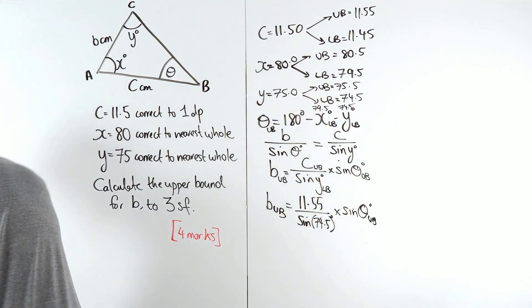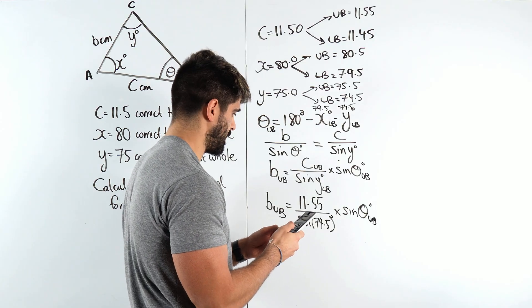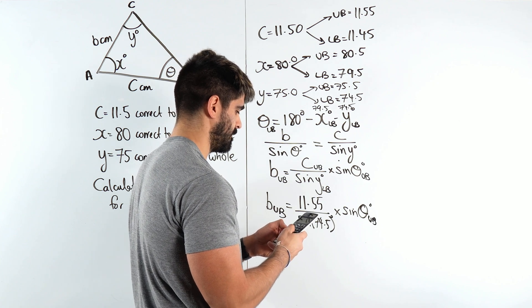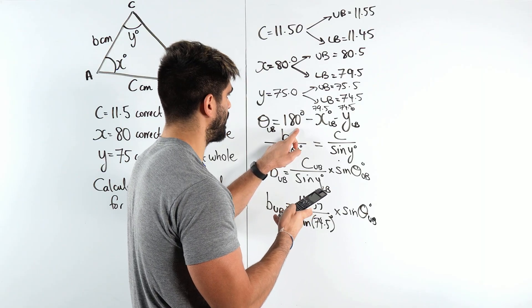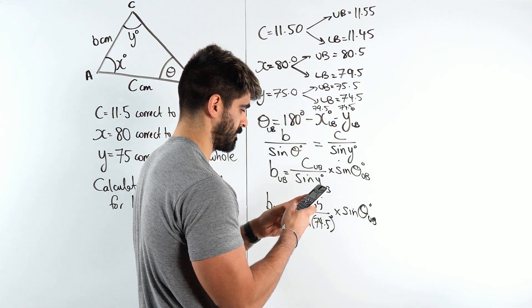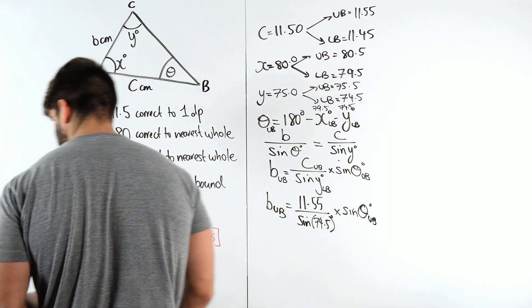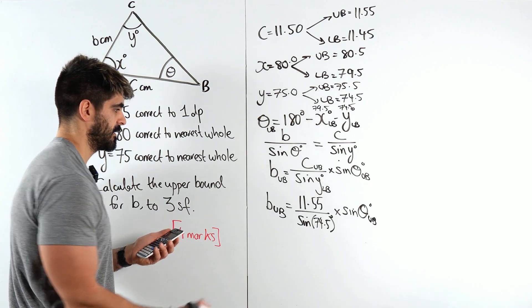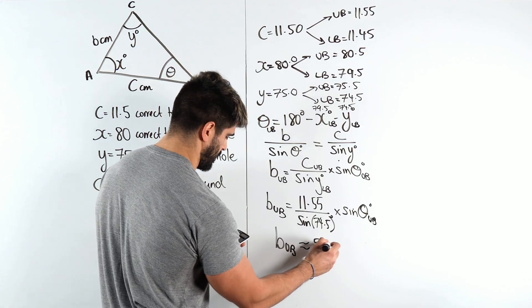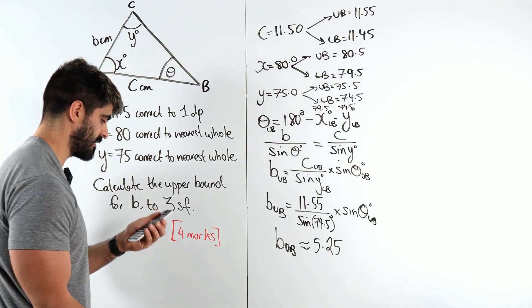Now we literally just type all of this in the calculator. I have 11.55 divided by sine of 74.5 times sine of, now I'm typing this in, 180 minus 79.5 minus 74.5. These are both my lower bounds. I get about 5.25. So to 3 significant figures, I get my b upper bound is about 5.25, and you don't need to put centimeters because it's already attached in the diagram, and that is our answer.